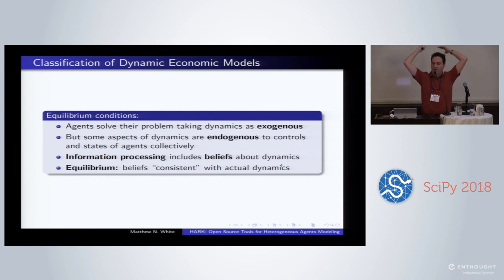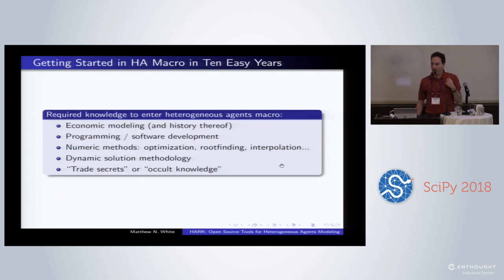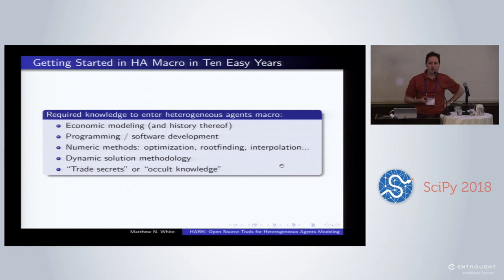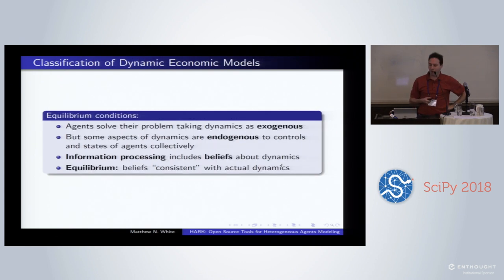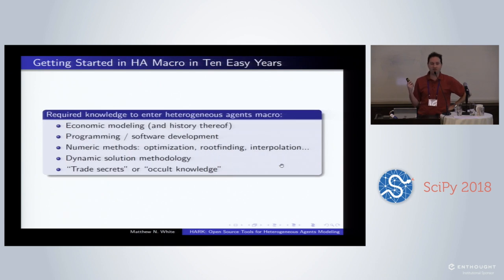What differentiates this from what engineers might think of as an optimal control problem is that some of the things individual agents treat as exogenous to them about dynamics are in fact endogenous to the entire system. The actions and states collectively of all agents generate those dynamics that I personally treat as exogenous. So you need some rule for how agents form their beliefs about those dynamics. An equilibrium means there is a consistency between how agents form their beliefs and the reality that comes out when agents act on those beliefs.